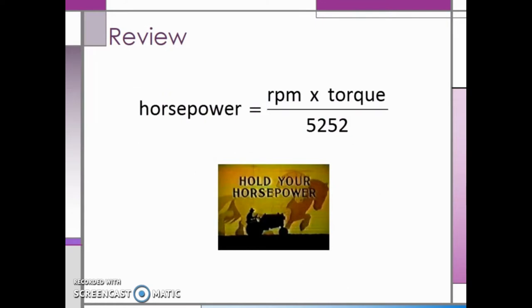Remember horsepower, or HP, is equal to the angular speed in revolutions per minute multiplied by the torque in foot-pounds divided by the constant 5252, which we need to include in order for the units to work out.